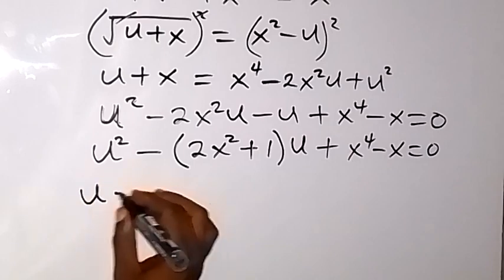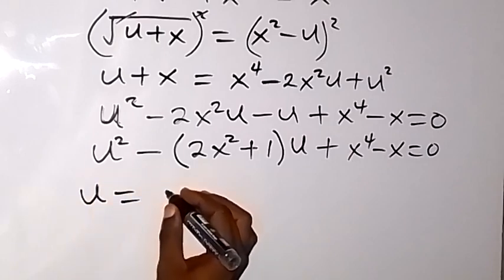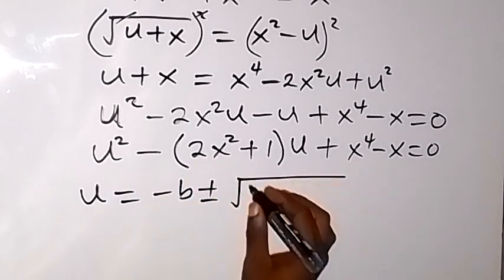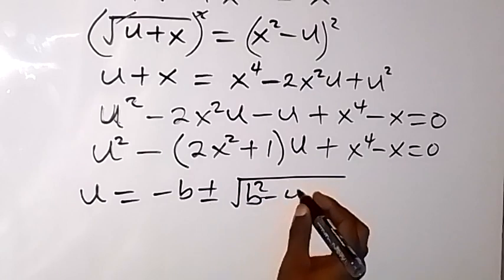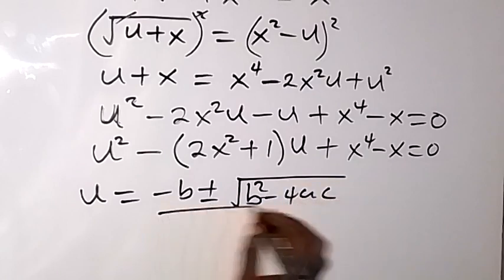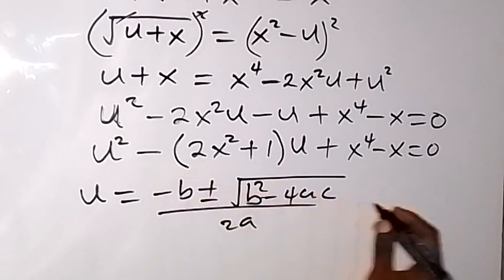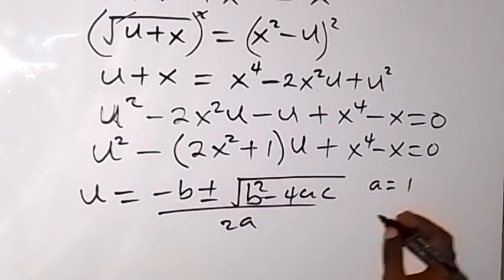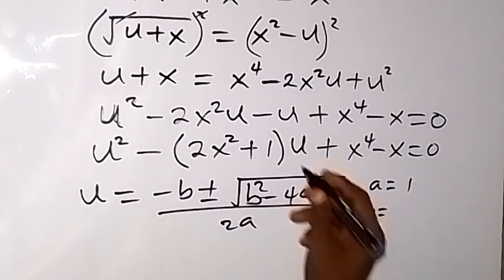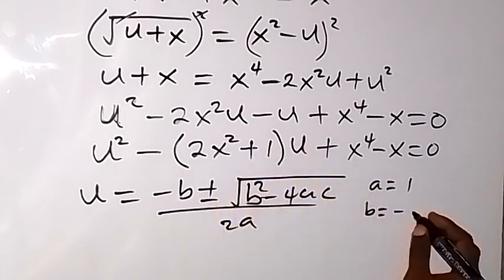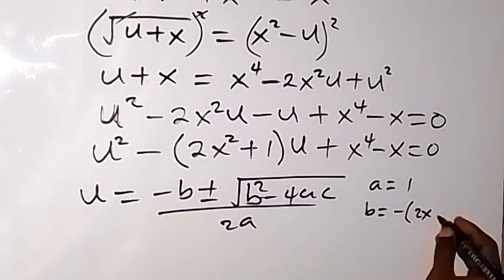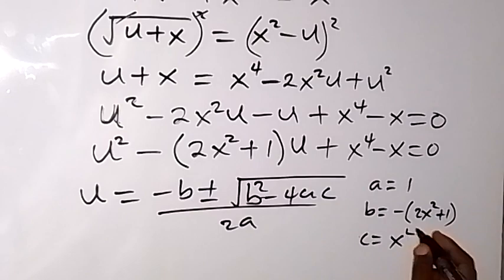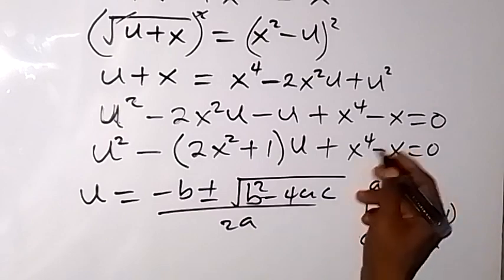We use the quadratic formula: u equals negative b plus or minus square root of b squared minus 4ac, all over 2a. Here a is 1, b is negative (2x squared plus 1), and c is x raised to power 4 minus x.